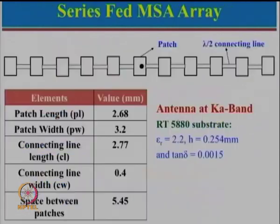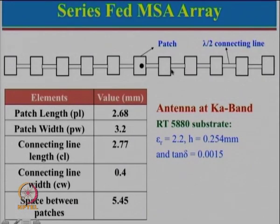Let us look at an example of a series-feed microstrip antenna array. Here we have 11 patches: 5 elements on the right, a central element, and 5 elements on the left. This configuration uses an odd number of elements so that it has left-hand and right-hand symmetry with respect to the feed.